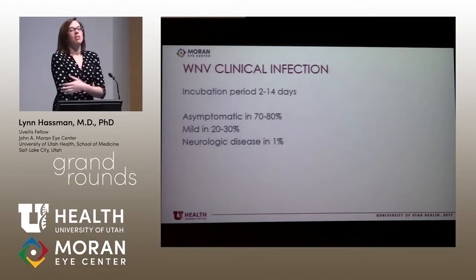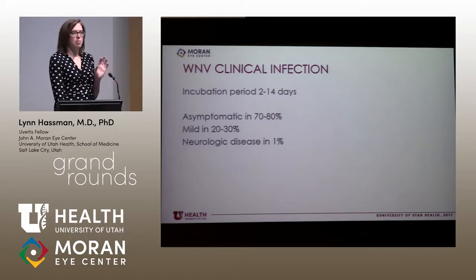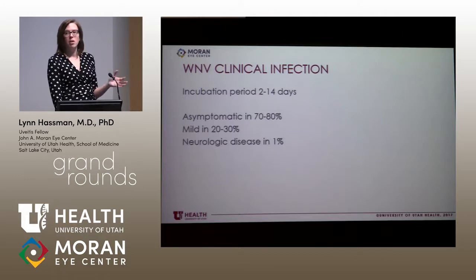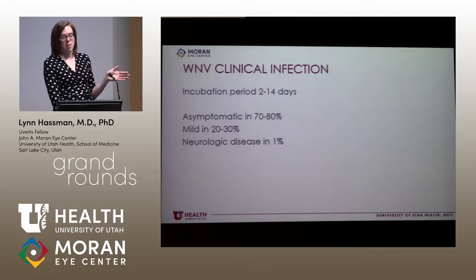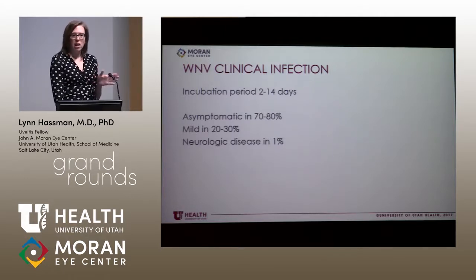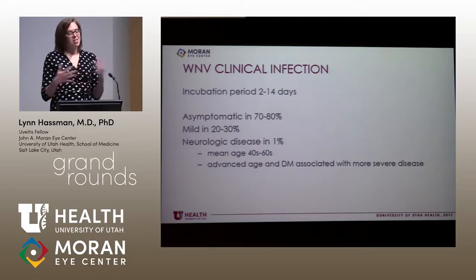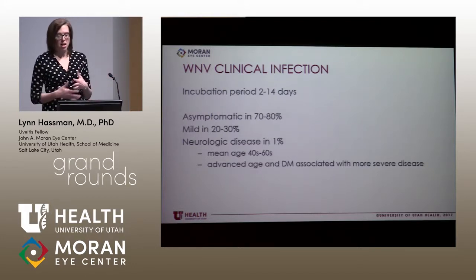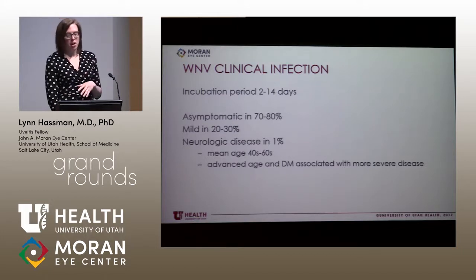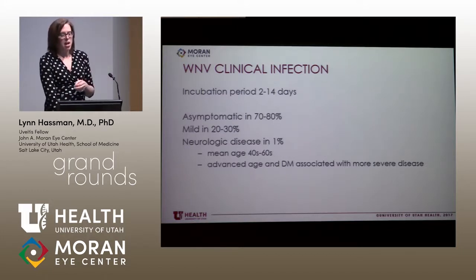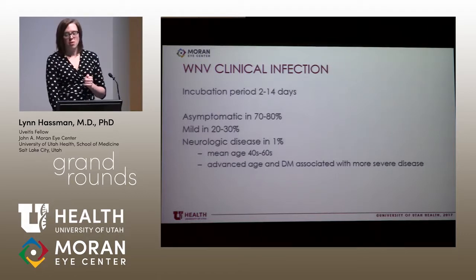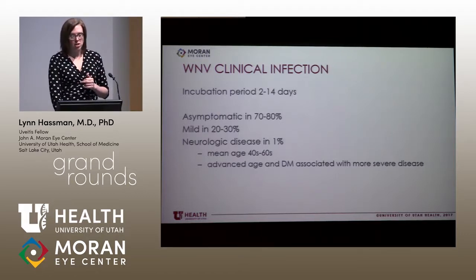West Nile virus clinical infection has an incubation period of 2 to 14 days and presents in a variety of ways. The majority of people — 70 to 80 percent — are totally asymptomatic. There's a mild febrile illness in about 20 to 30 percent, and neurologic disease in 1 percent. Neurologic disease is associated with a slightly older demographic, ages 40s to 60s. Advanced age and diabetes have also been associated with more severe neurologic disease.